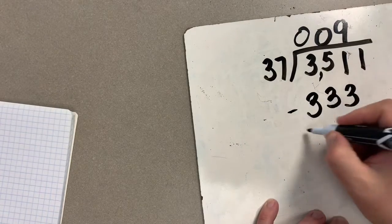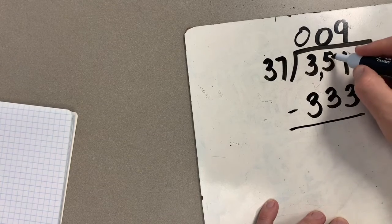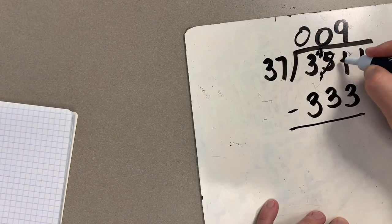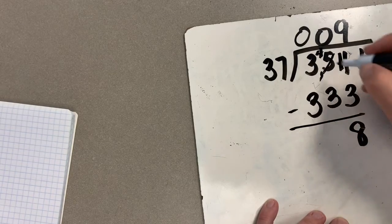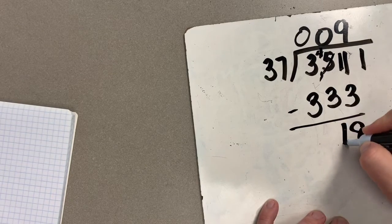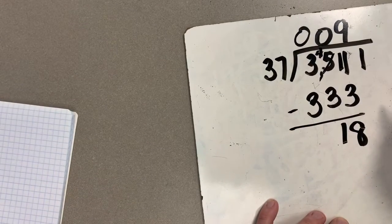So now we're going to subtract 333 from 351. We'll have to do some borrowing here. My fancy borrowing work. 11 minus 3 is going to give me 8, and 4 minus 3 gives me 1. Of course, 3 minus 3 gives me 0. You can drop that 0 there if that helps you out.